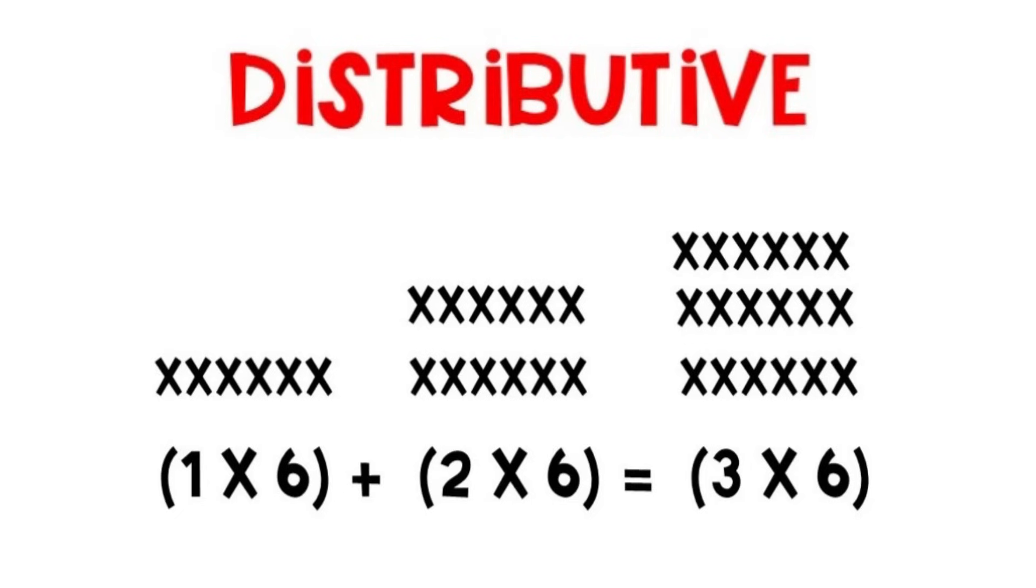The distributive property shows that we can break apart a number into smaller parts. For example, 1 times 6 plus 2 times 6 equals 3 times 6 because 1 plus 2 equals 3.